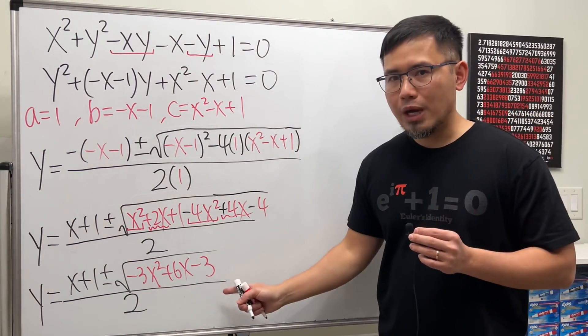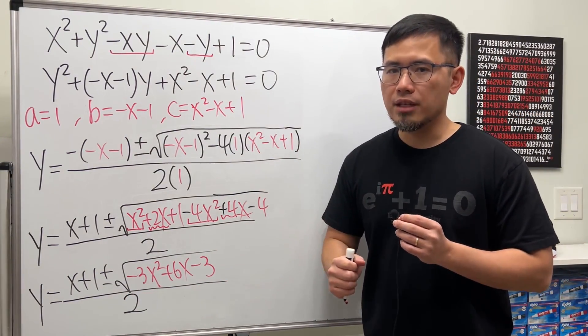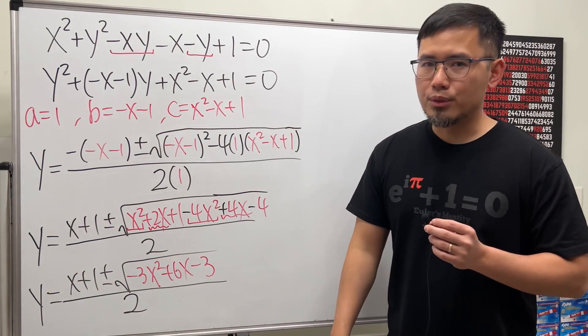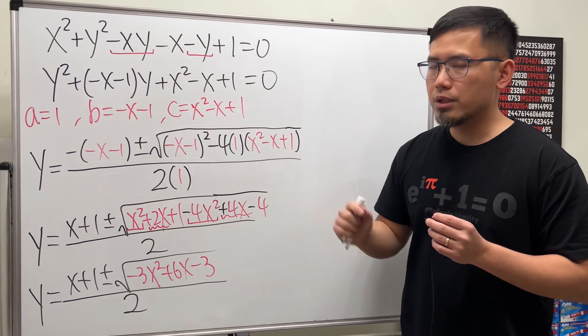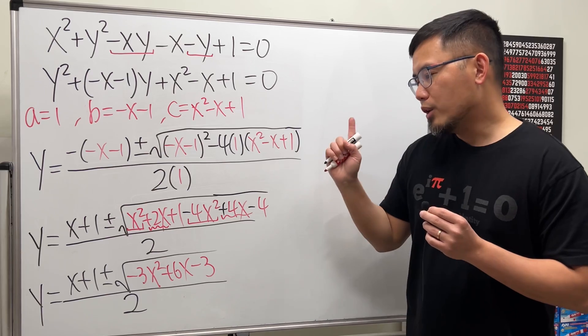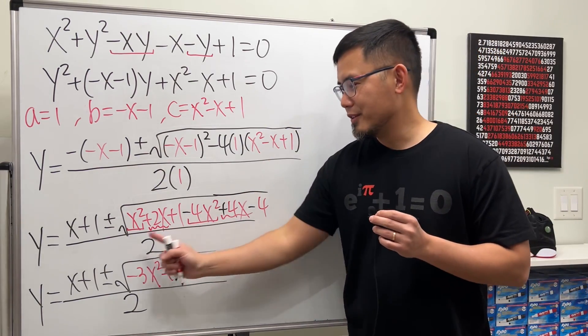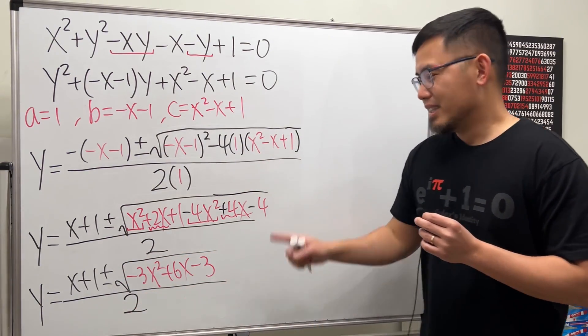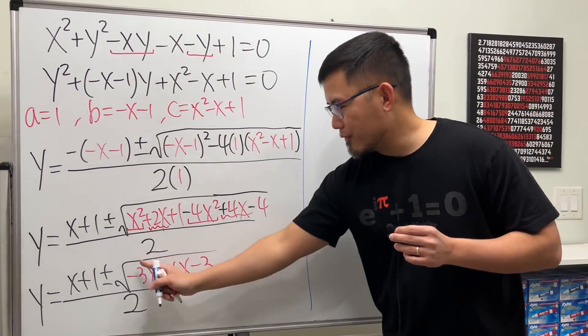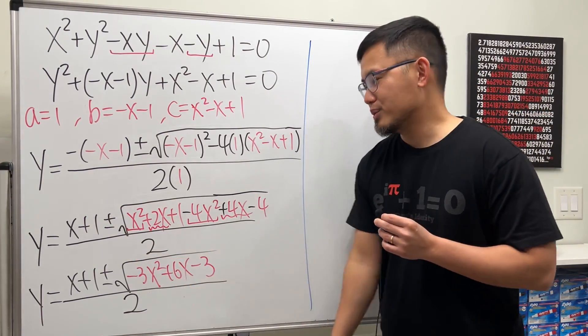Now usually after we have this, we can just go ahead and plug in some good x values, work this out, and then get the corresponding y values, and that will be the solution for the original equation. However, if you just want to stick with real numbers, there's only one good x value that we can use for this. Check this out right here. Let me show you guys the graph of the inside of the square root here.